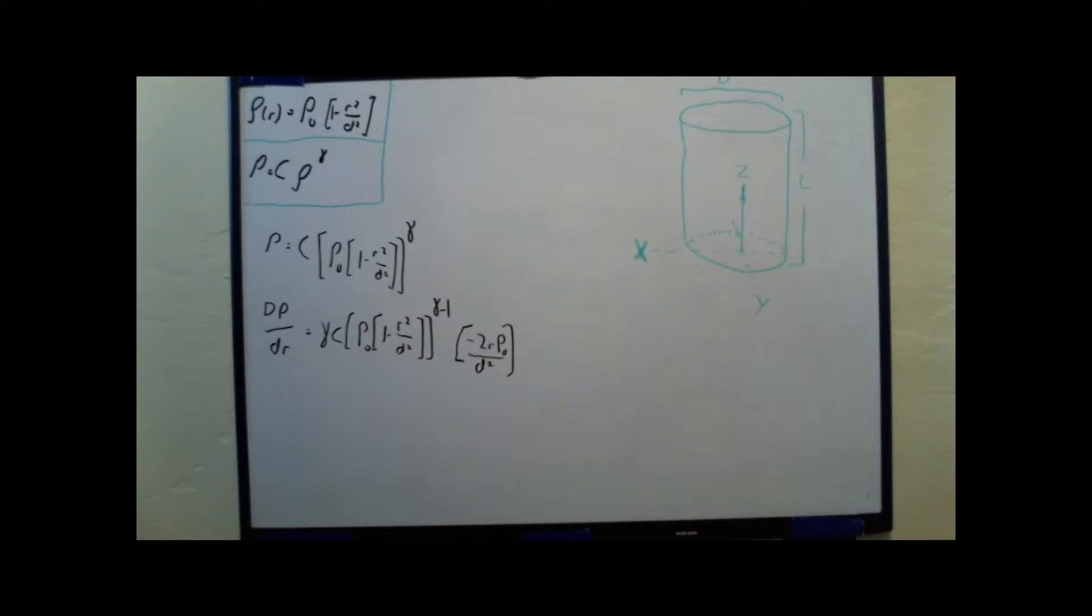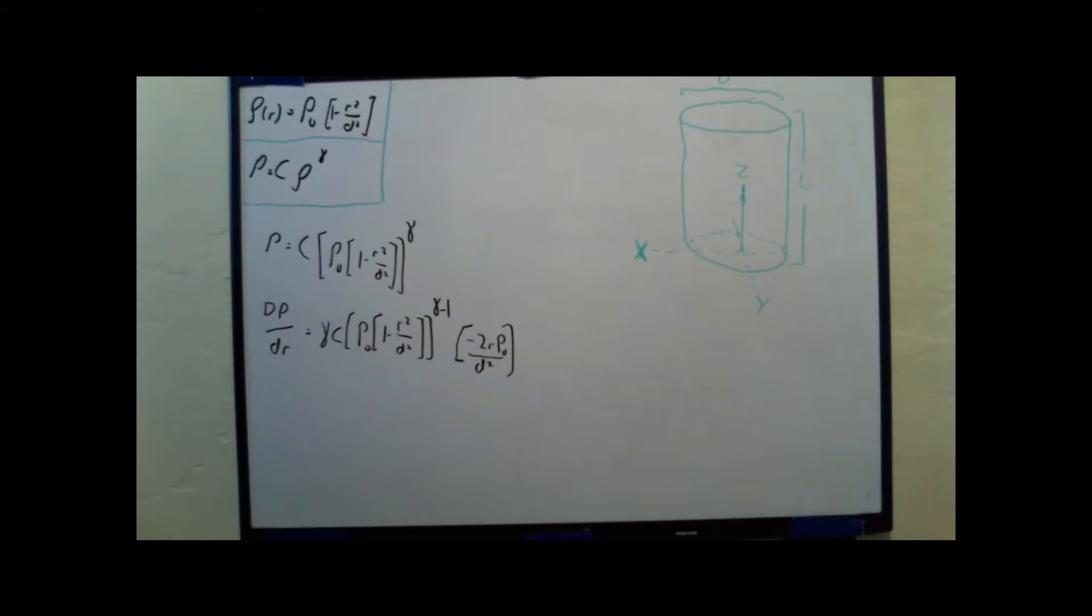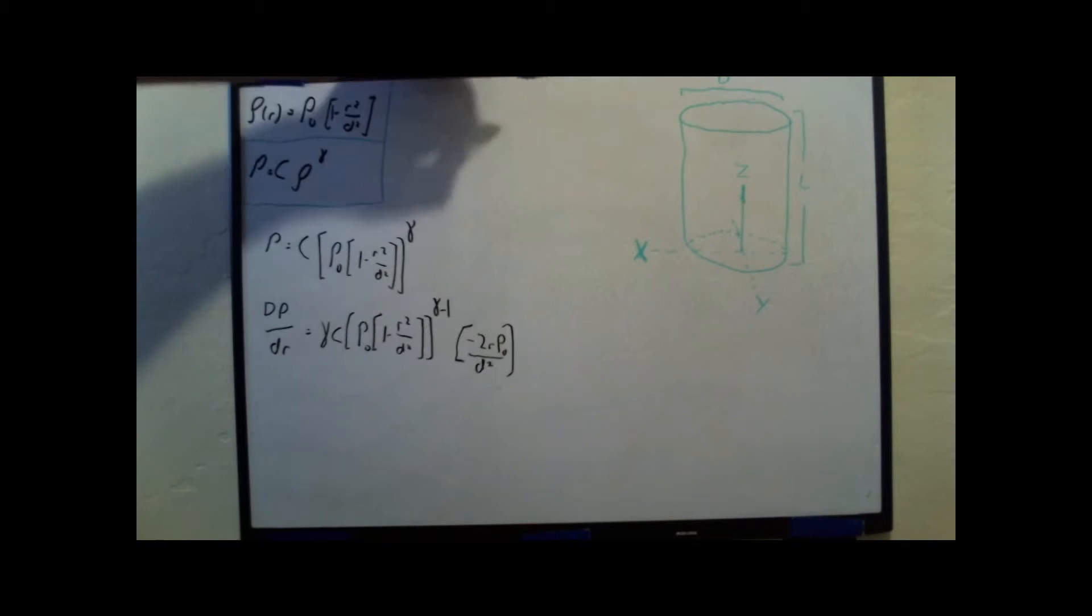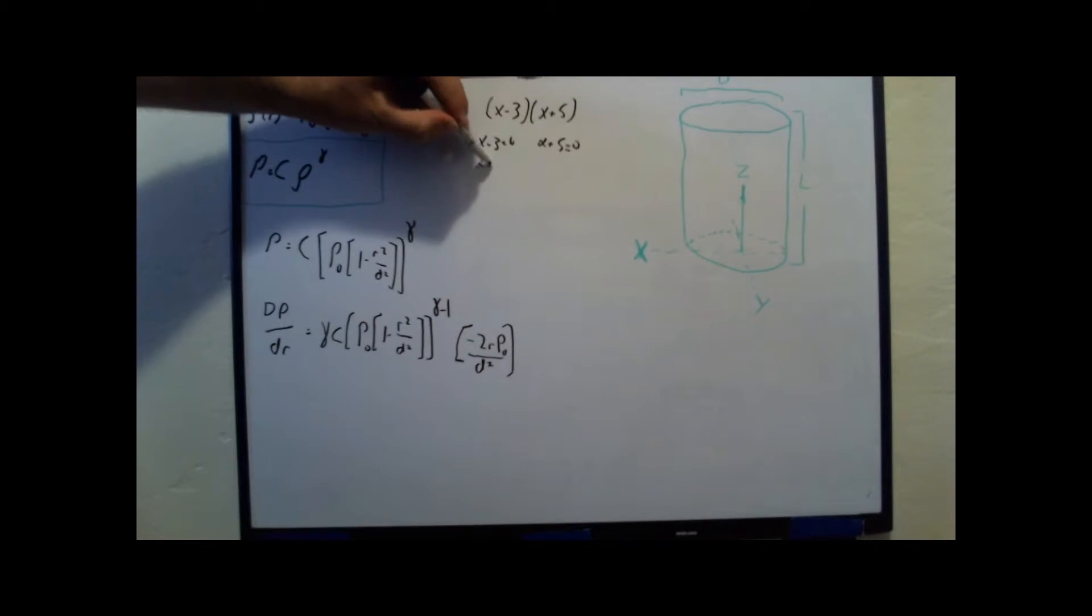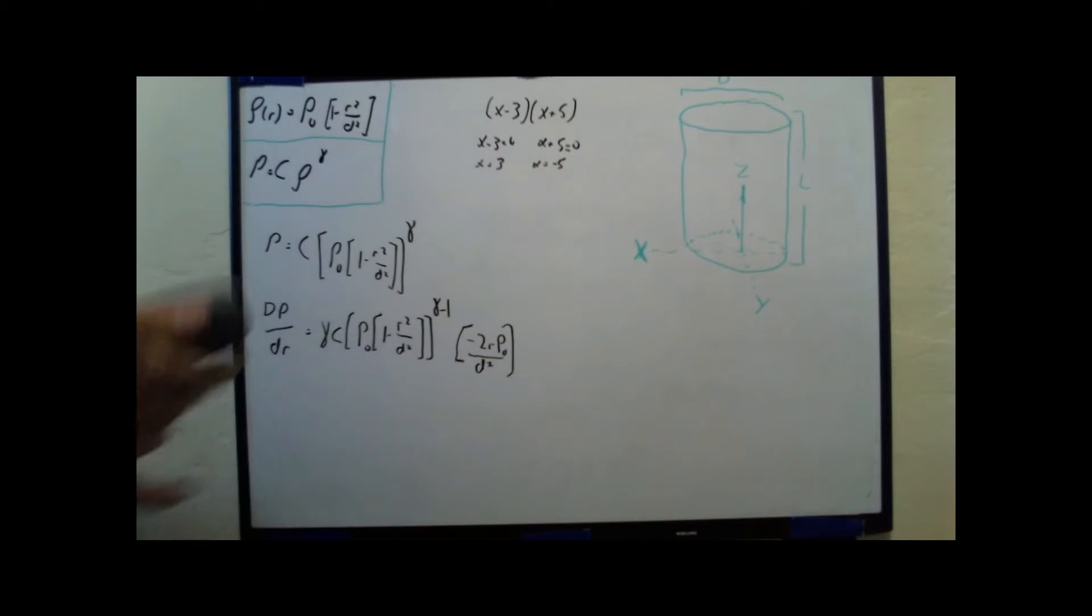Perfect! If I set this equal to zero, then I can find my solution of where the pressure is the highest. I've got two things being multiplied. This would be the equivalent of when I do the quadratic equation, and I've got like x minus 3 times x plus 5. And I say x minus 3 equals zero, and x plus 5 equals zero. So x must equal 3, and x must equal negative 5. Same thing. I'm going to do the same thing with the factors of the equation that I have here.